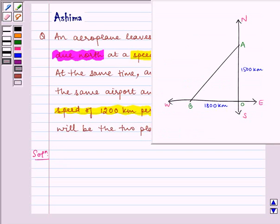Let us see the diagram. Let the first aeroplane starts from O and goes up to A towards north where distance covered OA is equal to speed into time.